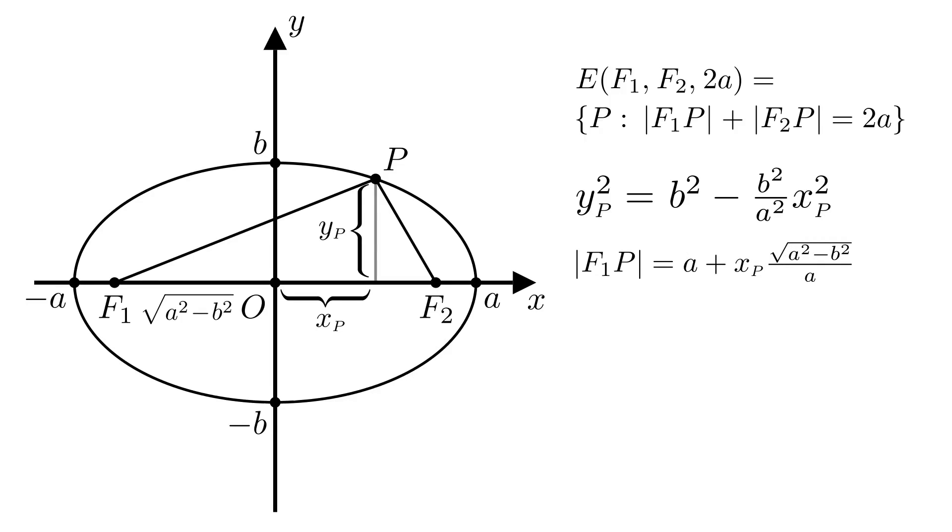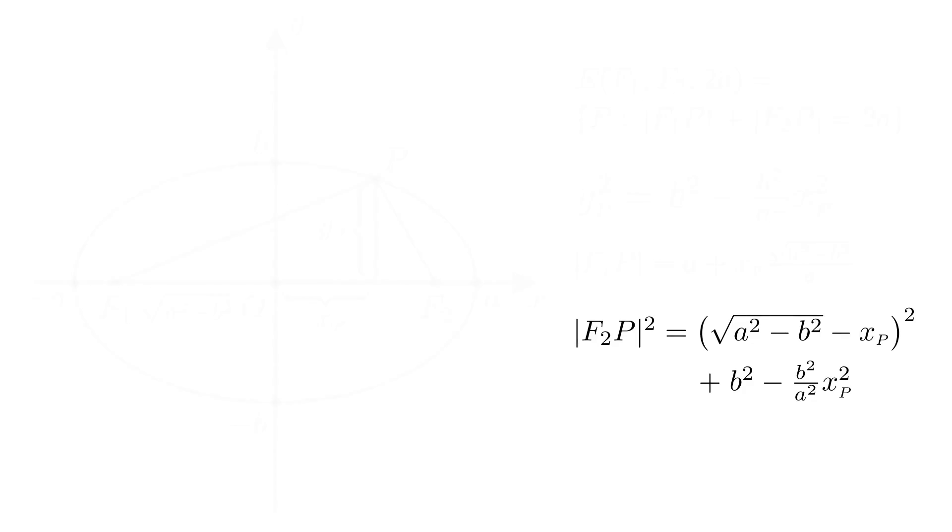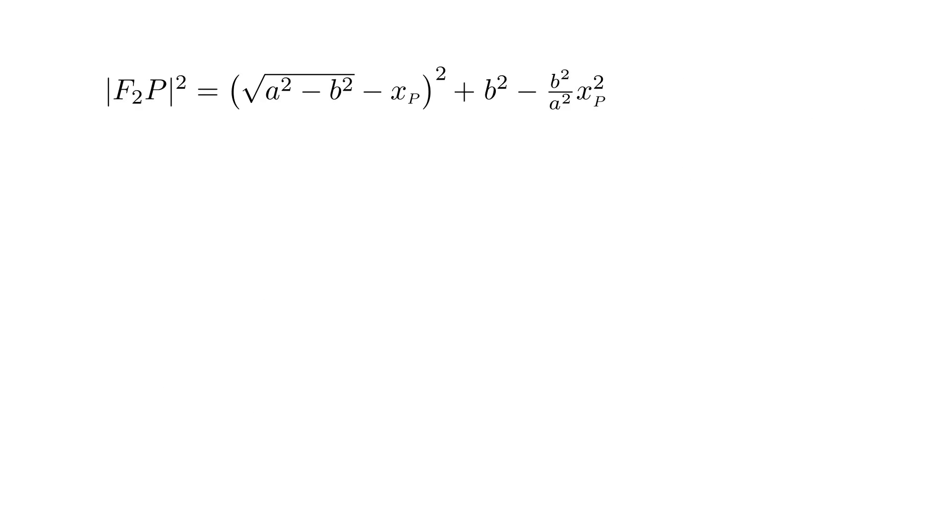And similarly, for |F2P| we have that |F2P| squared is equal to the square root of a squared minus b squared minus xP, and all of that squared, plus yP squared. And again, we have the expression for yP squared.